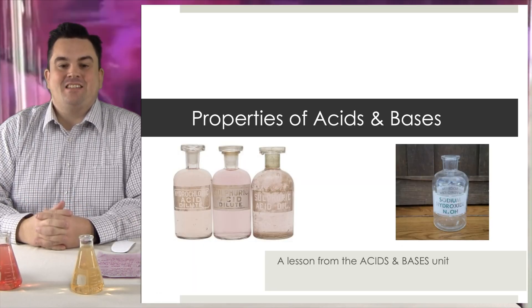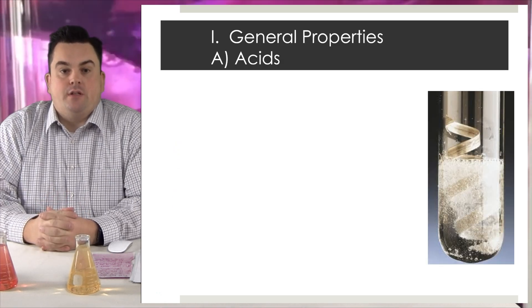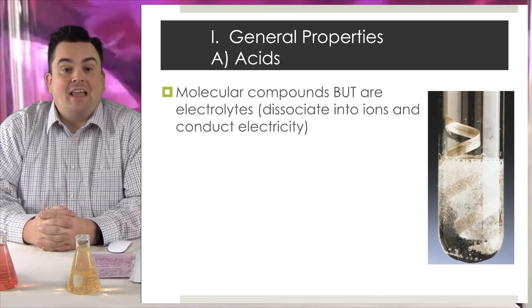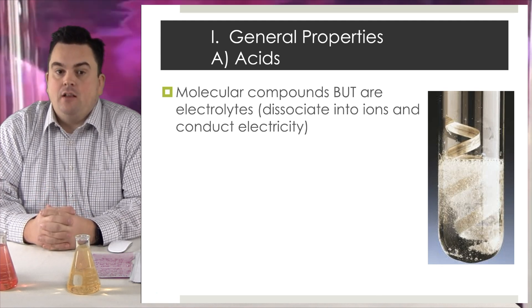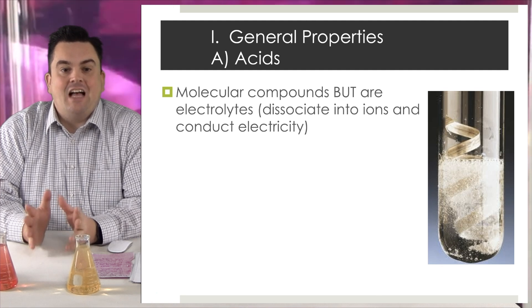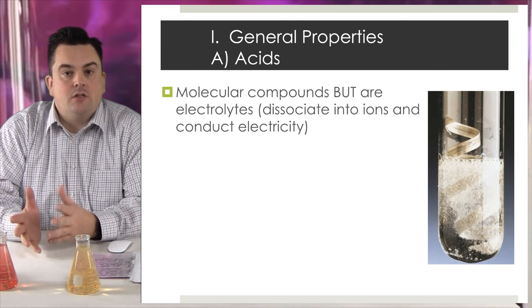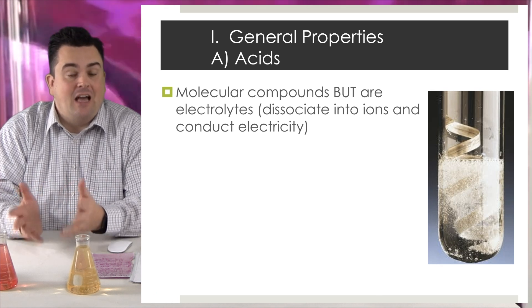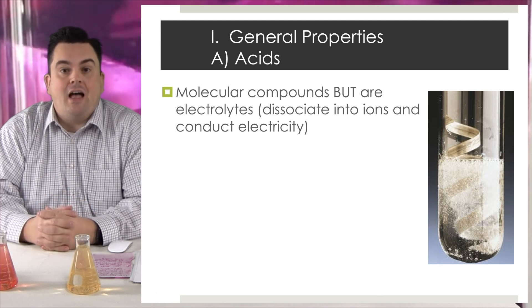Properties of acids and bases. A lesson from the acids and bases unit. General properties, acids. They're molecular compounds. Again, that means covalent. But are electrolytes. They dissociate into ions and conduct electricity. Now, this is an exception to the rule of electrolytes being ionic. Acids are molecular, but they still form ions in solution.